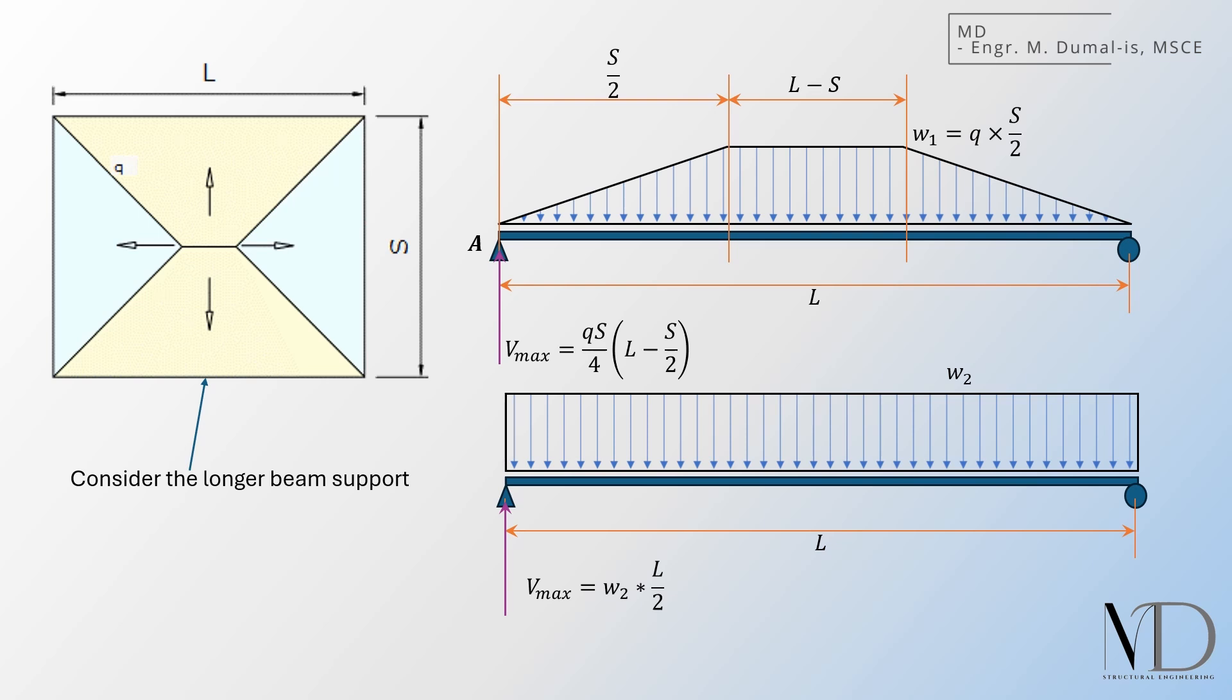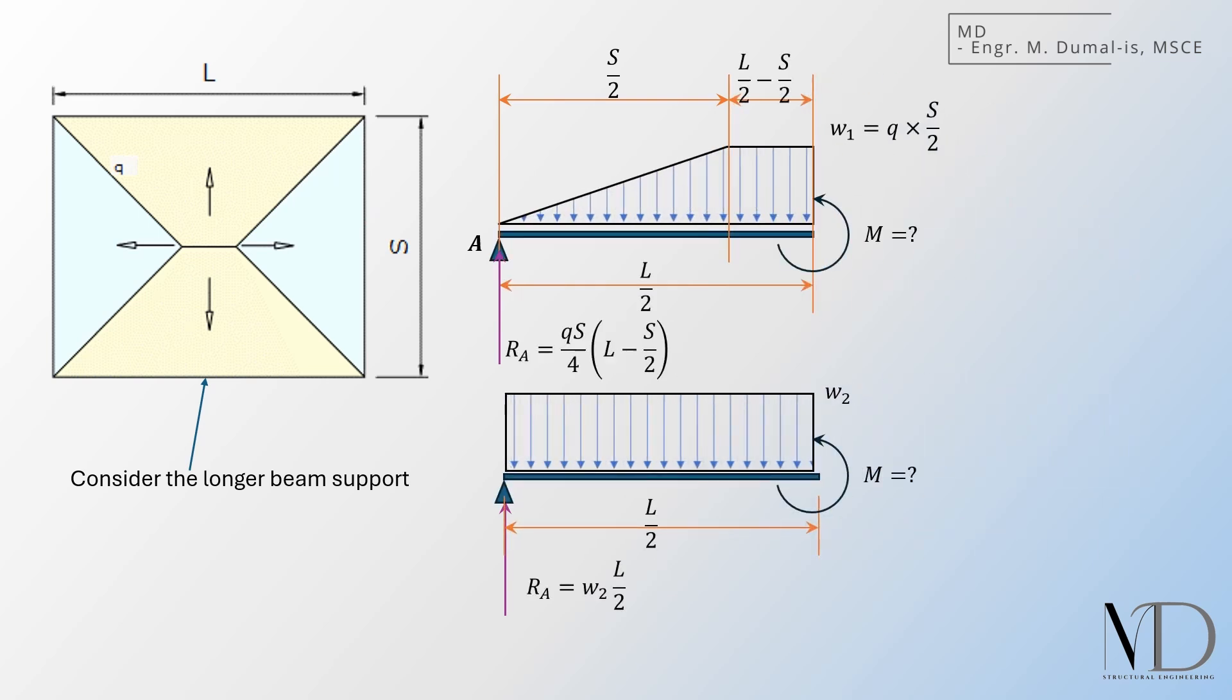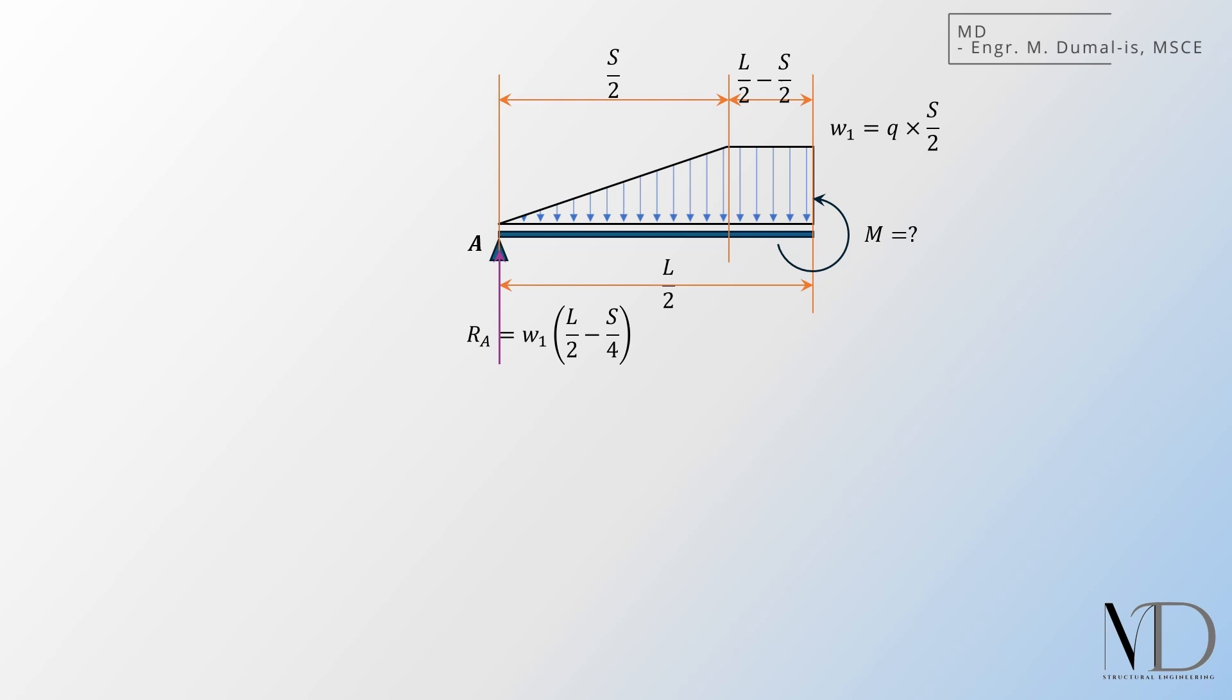We will be using the same support reactions from previous calculation. Recall that for a simply supported beam with symmetrical load, the maximum moment is found at the mid-span. The maximum moment for the trapezoidal load can be calculated by cutting a section at the mid-span, adding moments at that point, and equating the value to zero. The final moment is as follows.